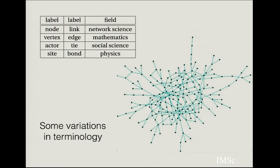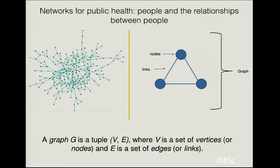If you take a generic network, there are specific terminologies used in different areas. In network science, these points are called nodes and the lines between them are links. In mathematics, they are called vertices and edges. In social sciences, they are called actors and ties. In physics, you might have sites and bonds. At some level, all of these terms mean the same thing, just depending upon which particular community you belong to.